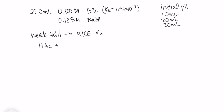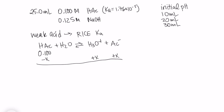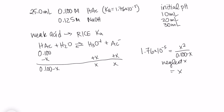We've got acetic acid plus water making H3O⁺ and acetate ions. We're starting with 0.1 molar. We lose a little from the left, we gain a little on the right and we get our equilibrium concentrations. To solve for our equilibrium concentration we use our Ka expression: 1.76 times 10 to the minus 5 equals x squared over 0.1 minus x. Because there's a big difference between our Ka and our initial concentration, we can neglect x, and we get x equal to 1.33 times 10 to the minus 3. Our pH is the negative log of that: 2.88.